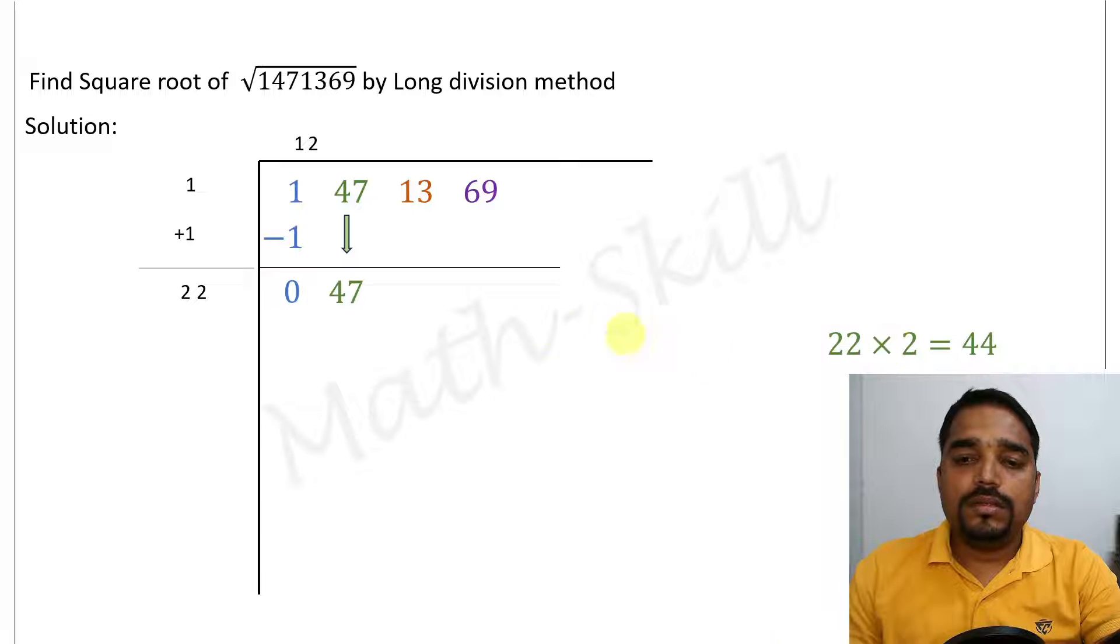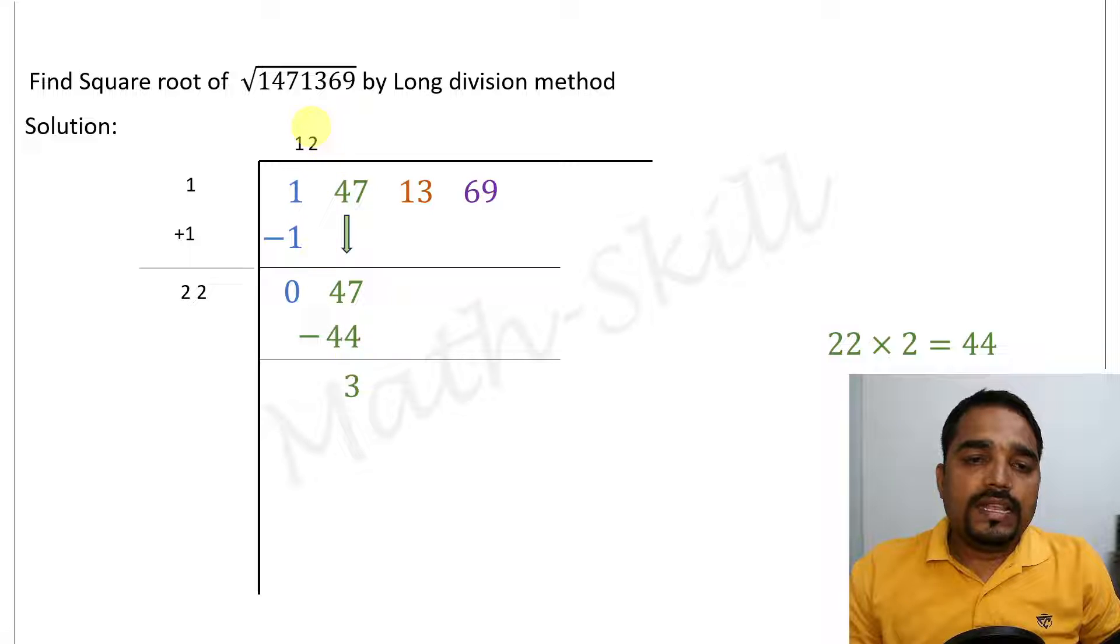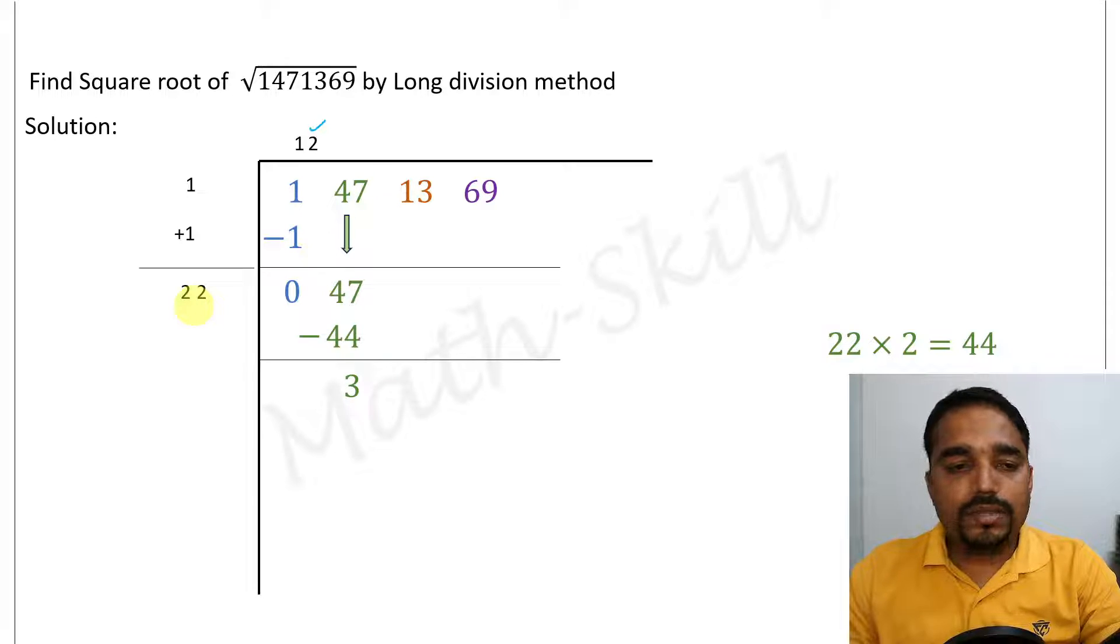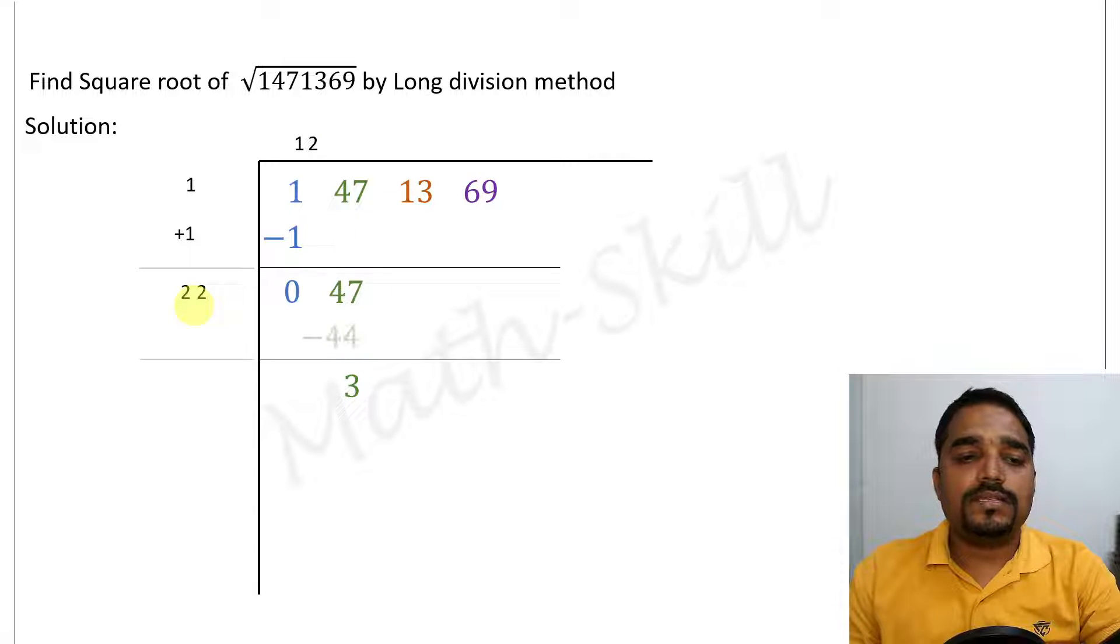Let's subtract 44 from 47. Upon subtraction we are getting number 3. 47 minus 44 is 3. Before proceeding, the latest number in the quotient is to be added to the 22. That is 22 plus 2 is 24. Let us take the next pair of digits down.